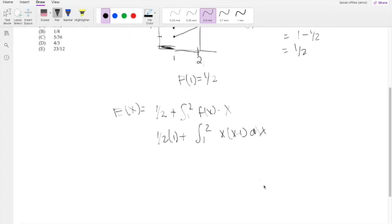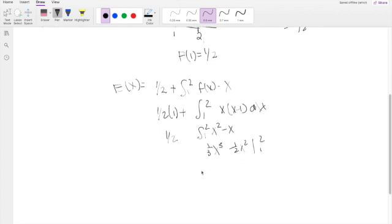Multiplying out, you get x squared minus x. Taking the antiderivative from 1 to 2, this part stays 1/2. You get x cubed over 3 minus x squared over 2, going from 1 to 2. Plugging in the upper limit, you get 8/3 - 4/2, which is 2, minus 1/3 plus 1/2 plus 1/2, which equals 4/3.